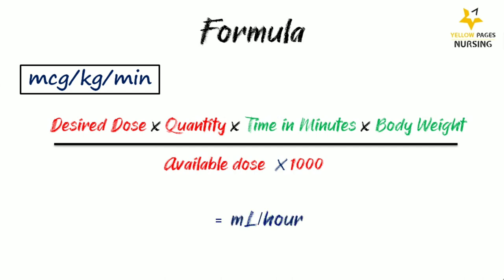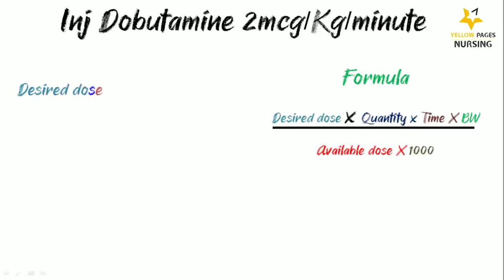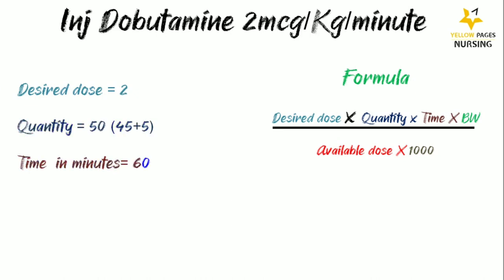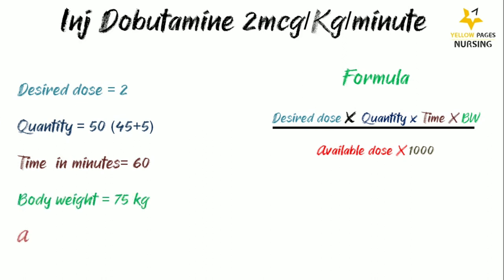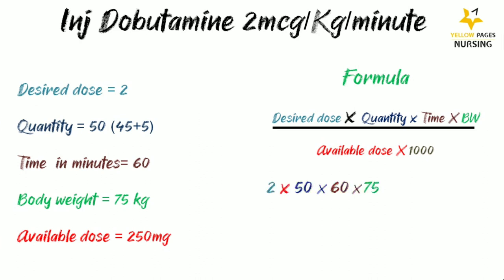The formula is: desired dose × quantity × time in minutes × body weight ÷ (available dose × 1000). Here the desired dose is 2, quantity is 50 — that is 45 ml of the diluted solution plus 5 ml of dobutamine — time in minutes is 60, body weight is 75 kg, and available dose is 250 milligram.